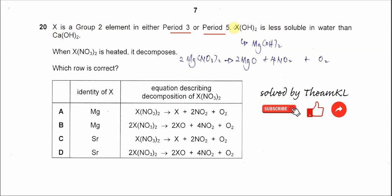From this statement we already know that it is magnesium hydroxide because the solubility of Group 2 hydroxides increases down the group. So magnesium hydroxide has a lower solubility compared to calcium hydroxide.